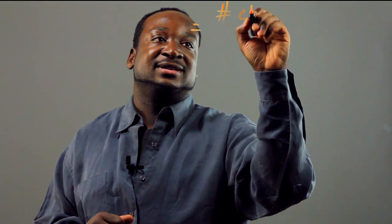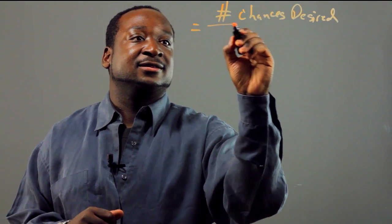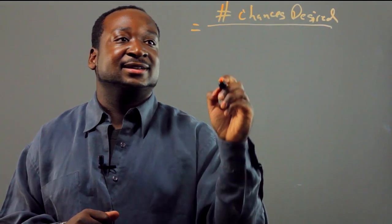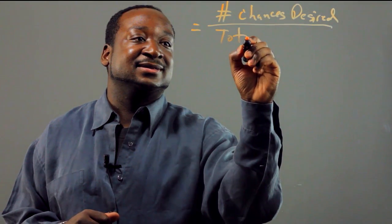When you talk about probability, you come up with a ratio, and the ratio is the number of chances that the outcome you want occurs over the total number of possible outcomes.